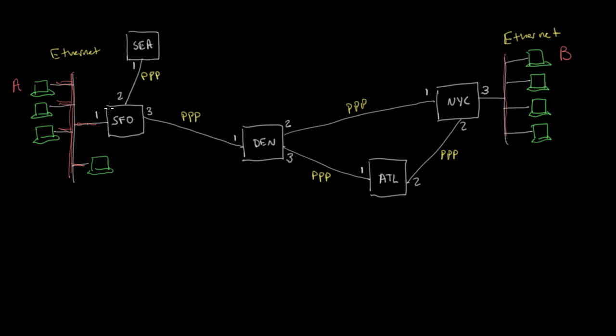So is there some way to get this device here, this device in San Francisco, to forward that frame over the PPP link? Well, if we just did that, then we'd actually run into another problem.